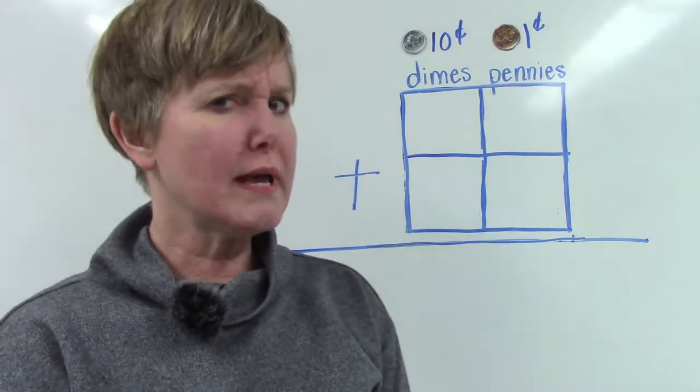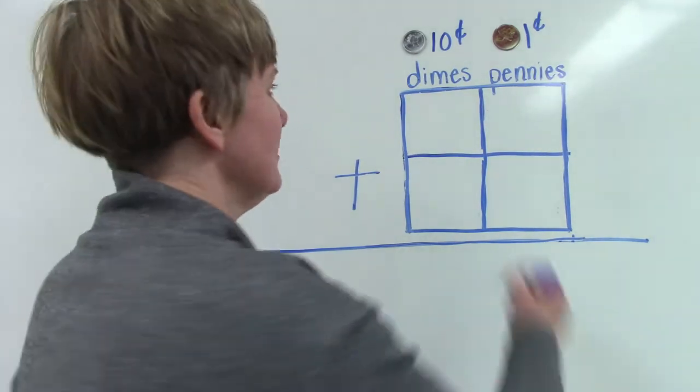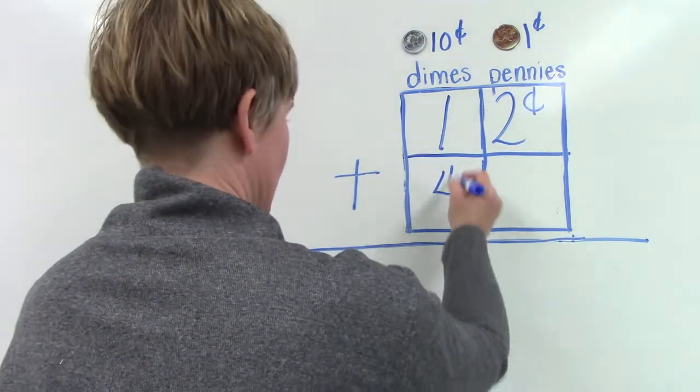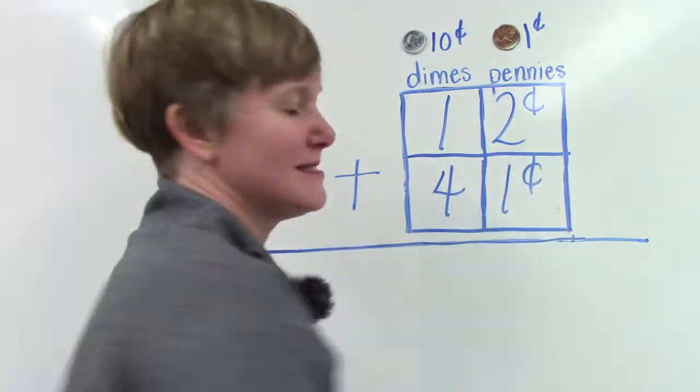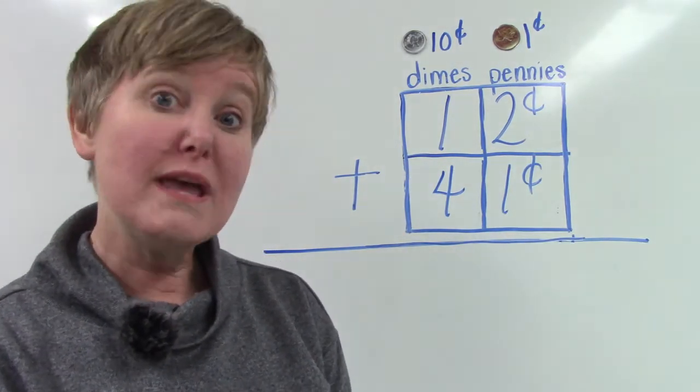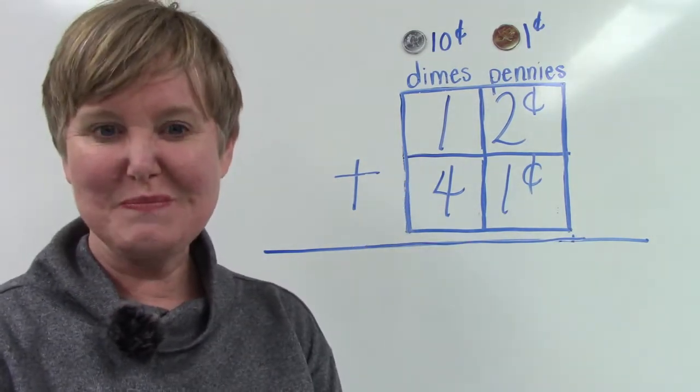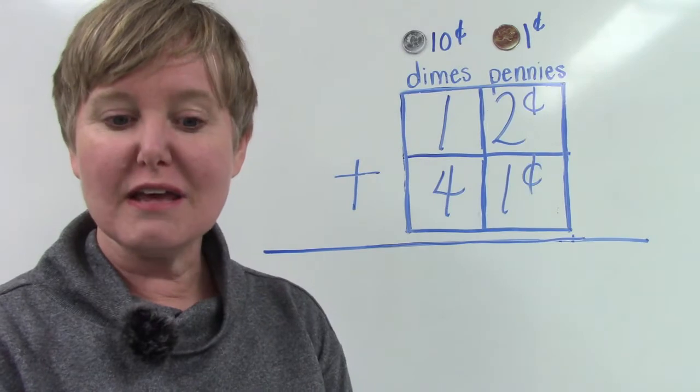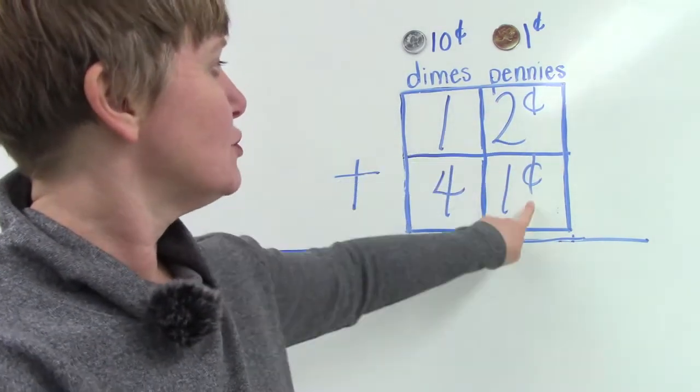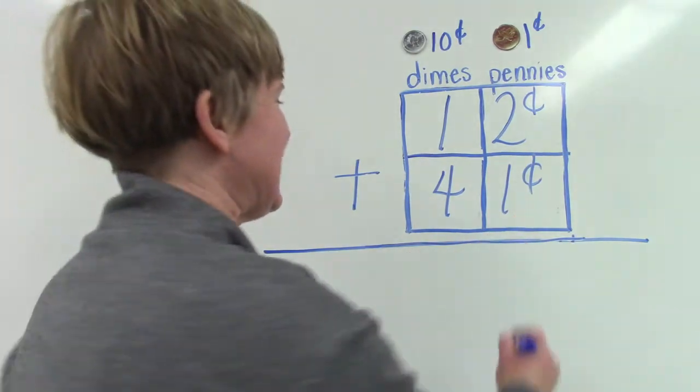If we were to add together twelve cents plus forty-one cents, even though we don't have the dimes or the pennies, we could still use our graph to figure it out. We're going to start off in the ones place or the pennies column. Two plus one. That's easy. It's three.